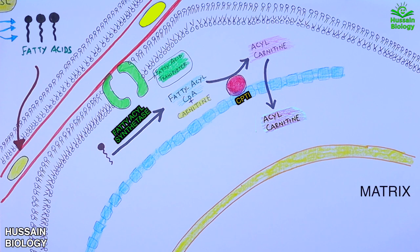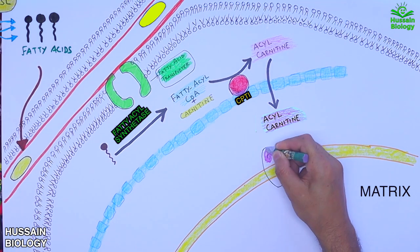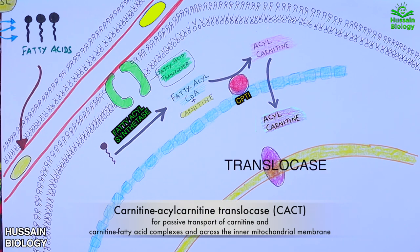Now from here we need to move this acyl-carnitine into the matrix, but it's not permeable. So for this to occur we have translocase protein on the inner mitochondrial membrane.